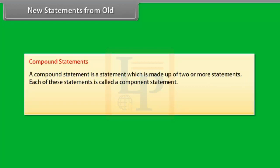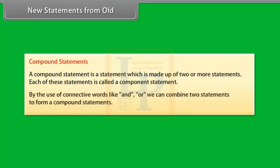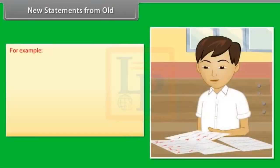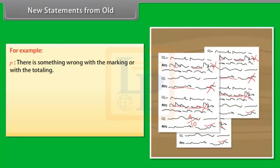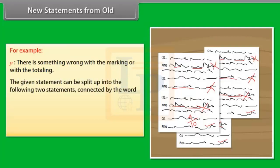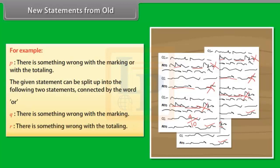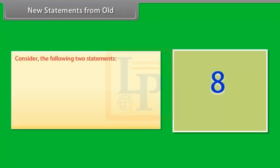Compound statements. A compound statement is a statement made up of two or more statements. Each of these is called a component statement. By using connective words like AND or OR, we can combine two statements to form a compound statement. For example, p is the statement 'There is something wrong with the marking or with the totaling.' This tells us there is something wrong in the marking by the examiner or in the totaling.